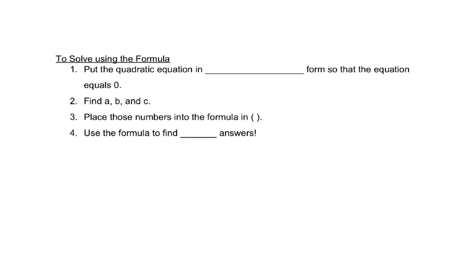The quadratic equation must be in standard form first, just like in the last section, so that it equals zero. Then we find a, b, and c, put those numbers into the parentheses, and use the formula to find two answers. So now let's see how it works.